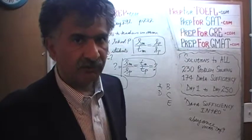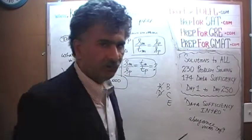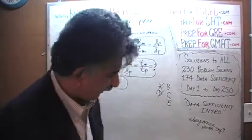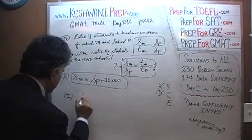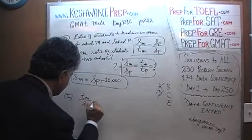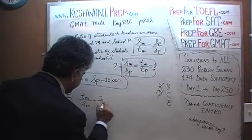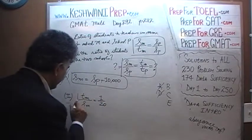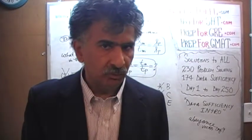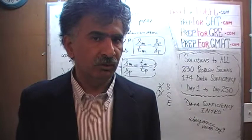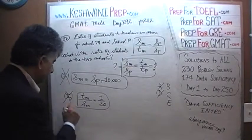Now that we have established the first statement by itself is not enough, we know the answer cannot be A or D. It will have to be either B, C, or E. In the second statement, they tell us that the ratio of students to teachers in school M is 1 to 20. Knowing the ratio of students to teachers in only one school is not enough to figure out the ratio of students in the two schools. The second statement by itself is also not enough.